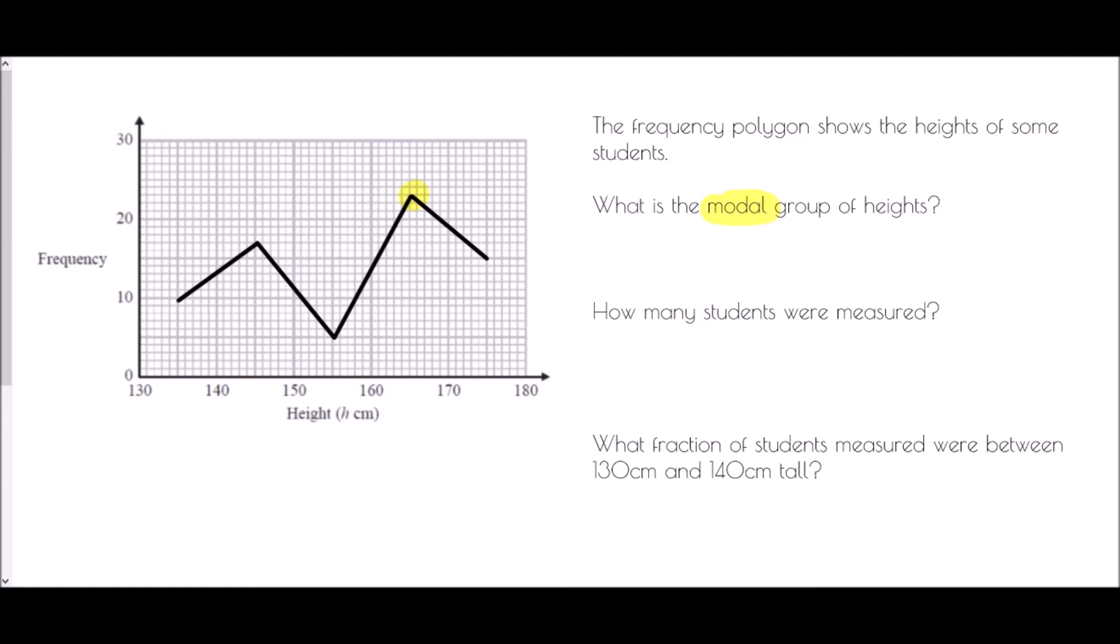Now the point here is actually marked at 165. Now as we saw before, we plot all the points at the midpoint of the group. Now if we have a look here, each of our points that we have drawn is at a 5 here. So what we can say is each group must be 10 wide and the midpoint therefore must be between 160 and 170. And so the modal group would be 160 to up to 170 centimeters. So that is the modal group.